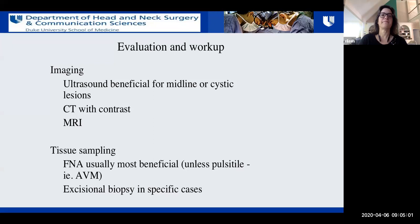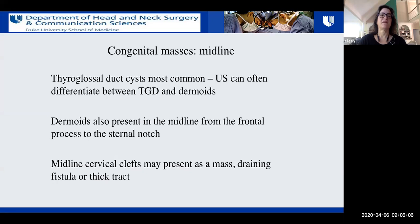Midline congenital neck masses are generally thyroglossal duct cysts, which are the most common. Ultrasound can help differentiate between thyroglossal duct cysts and dermoid cysts, and occasionally CT scans are done to confirm. The other important thing is to make sure there is normal thyroid tissue present. In rare cases, a thyroglossal duct cyst or a lingual thyroid will be the only thyroid tissue the child has, which can result in permanent hypothyroidism. It's not as common in thyroglossal duct cysts as in lingual thyroids, but when imaging, make sure to assess the thyroid gland itself.